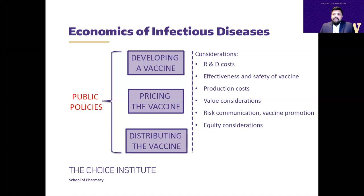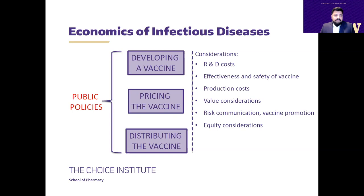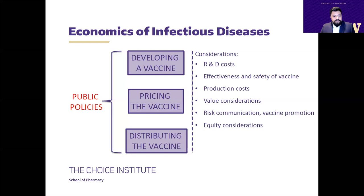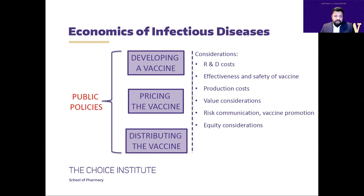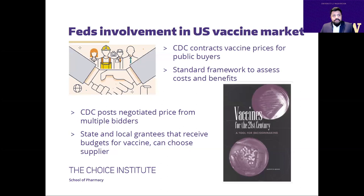The economics of infectious disease primarily relies on public policy that facilitates development of vaccine, setting the correct price, and enhanced distribution. Many considerations come into play, including R&D costs, effectiveness, safety, production costs, value considerations, communications, and equity. In the U.S., unlike the pharma sector where formal price negotiation by the government is often sought, for vaccines — where market incentives are weak — the federal government runs the market on vaccine prices and purchase.